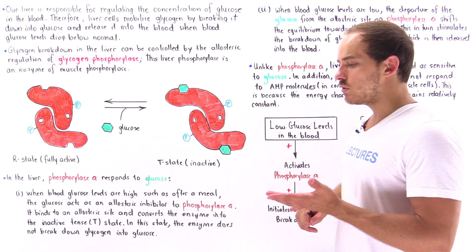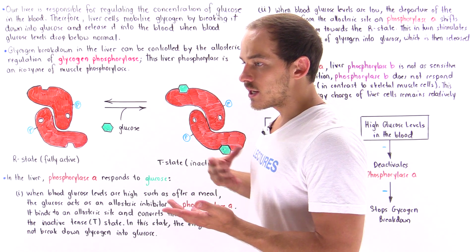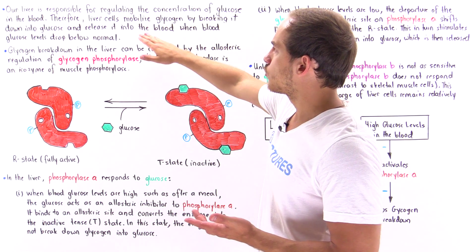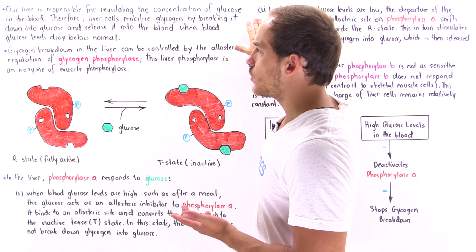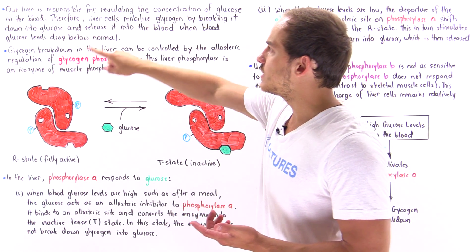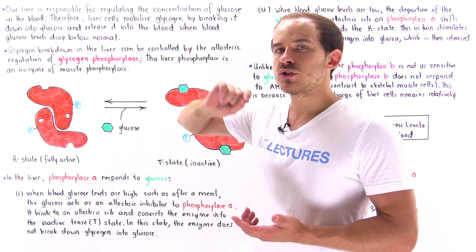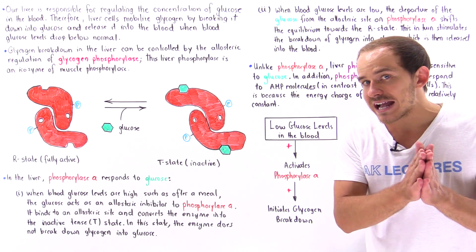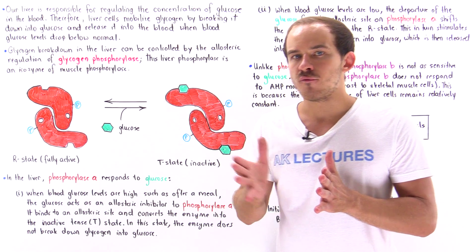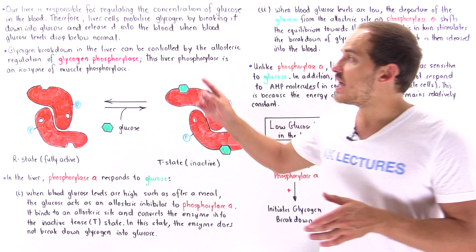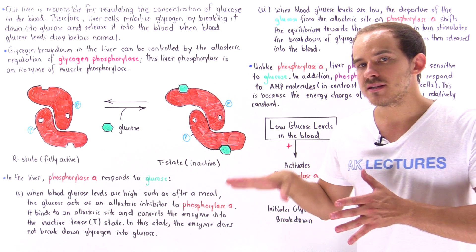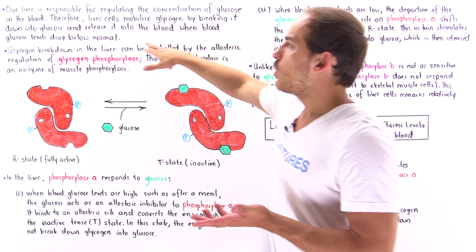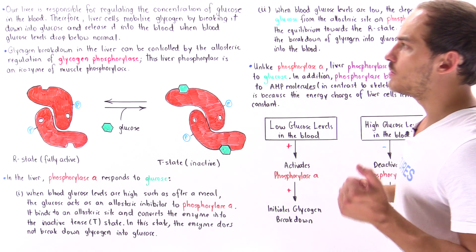In liver cells things are slightly different because liver cells have a different function than skeletal muscle cells. The entire goal in liver cells is to regulate the concentration of glucose in the blood. Liver cells can mobilize glycogen by breaking it down into glucose, but they don't use that glucose to form ATP — instead they release it into the blood to increase blood glucose concentration when levels drop below normal.